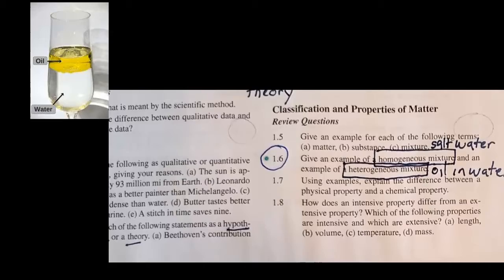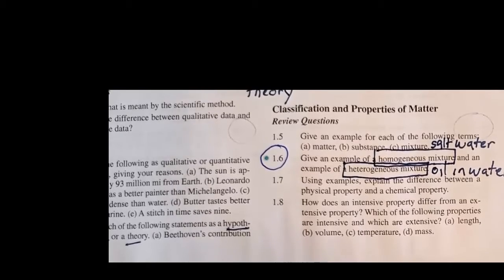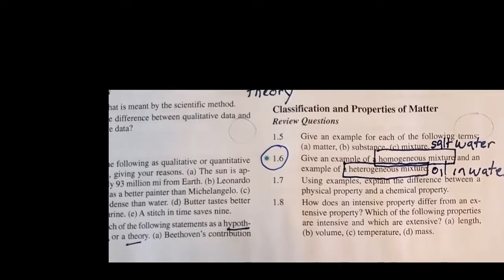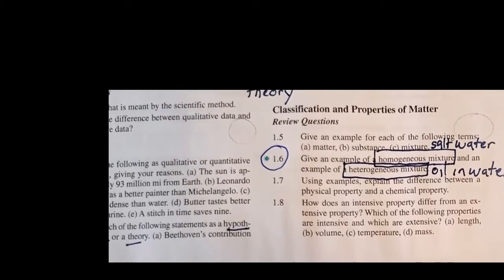Chicken noodle soup, pond water, anything that you can see distinct layers is heterogeneous. Anything that is uniform, that you really don't know what's in there unless it's labeled or unless you taste it, that's called a homogeneous mixture.